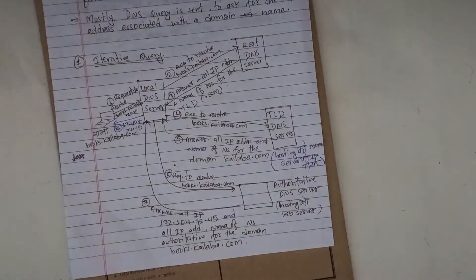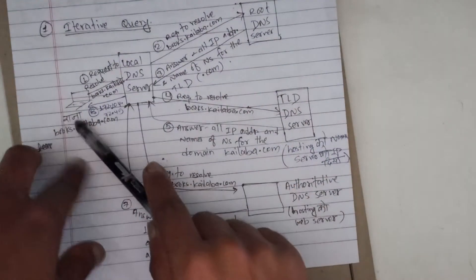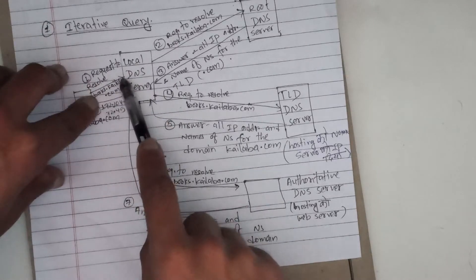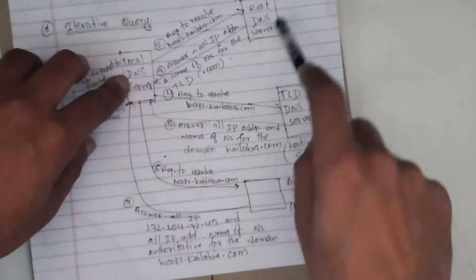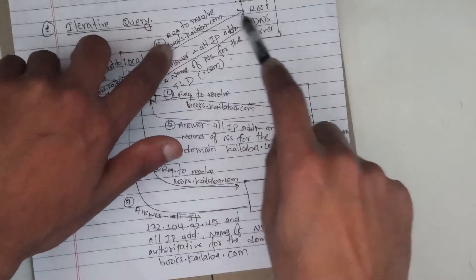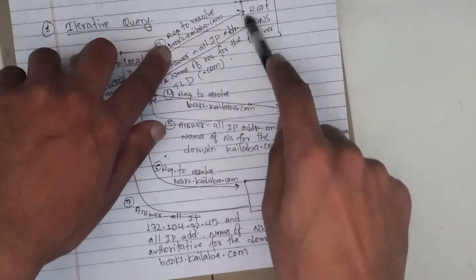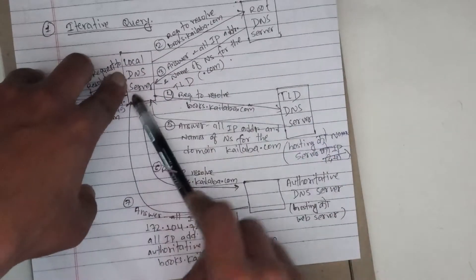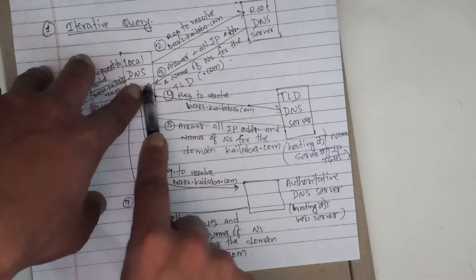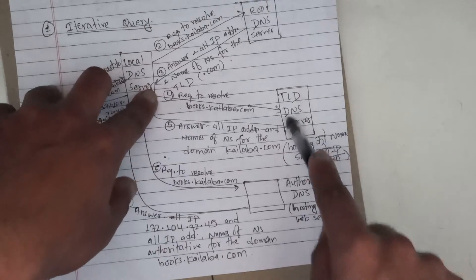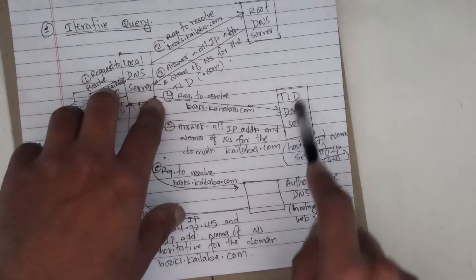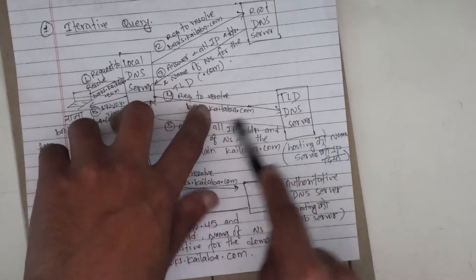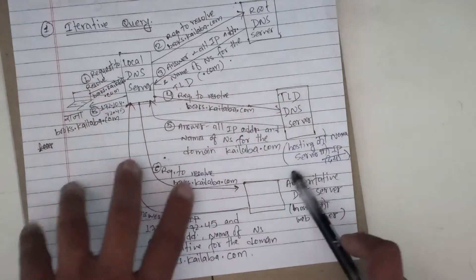So let's see the theory part with the iterative diagram. The first time we go to books.kainlava.com and enter it in the browser, the first request goes to the local DNS server. The local DNS server then sends a request to the root DNS server to resolve books.kainlava.com. The root DNS server returns the IP for the TLD .com server. Then you contact the .com TLD server, which returns the name server for kainlava.com — including the hosting name server IP.